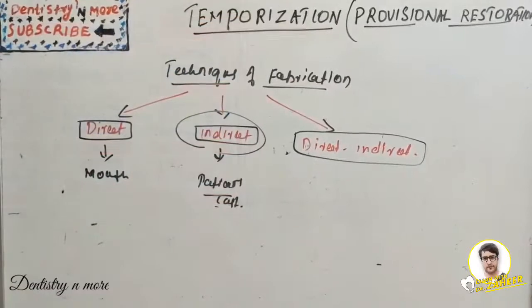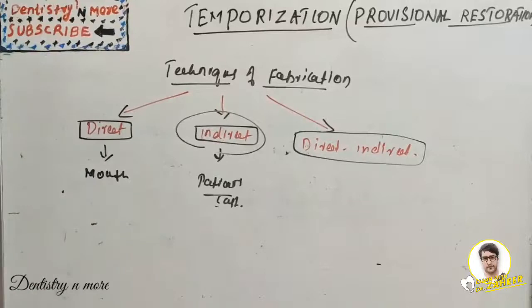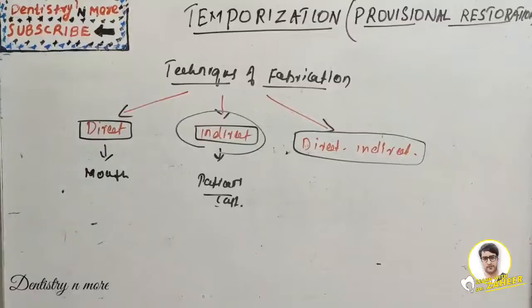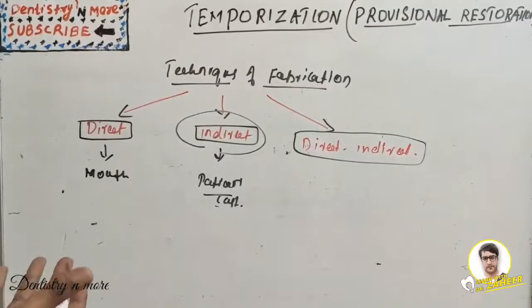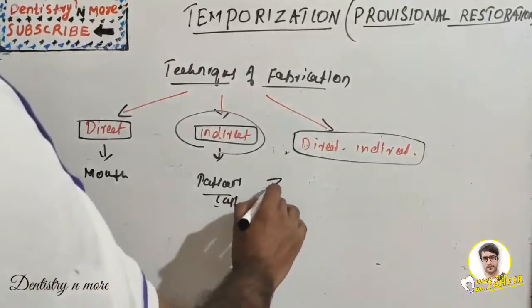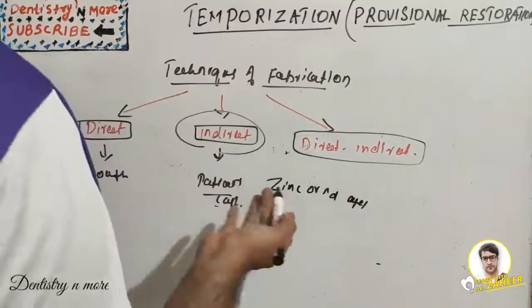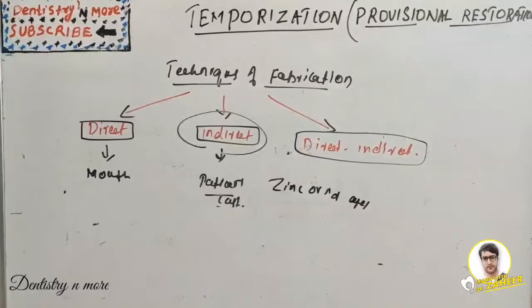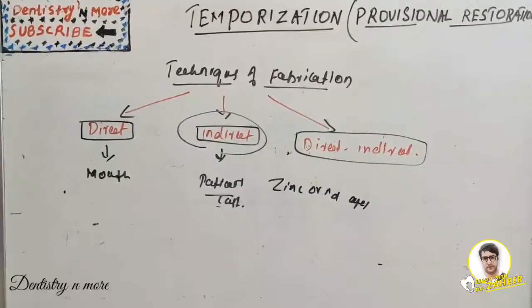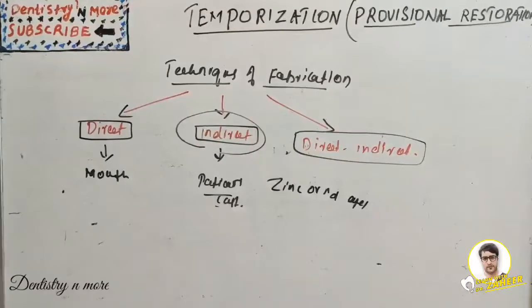After fabrication, cementation must be considered. The cement should have low solubility, chemical compatibility, and ease of excess material removal. The cement commonly used is zinc oxide eugenol; non-eugenol cements can also be used. Zinc phosphate, polycarboxylate, and GIC are not used because they are very difficult to remove during final fixation.